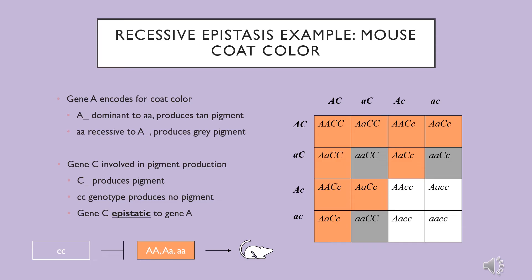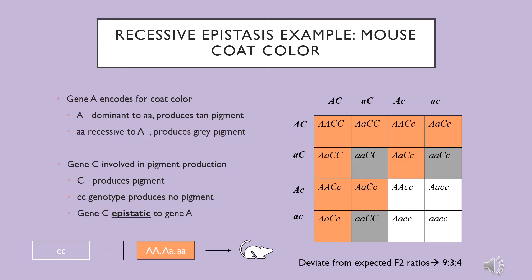As a result of this recessive epistasis, we once again deviate from expected Mendelian F2 ratios, and get a 9 to 3 to 4 ratio across offspring phenotypes.